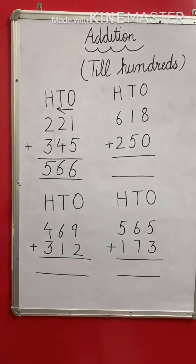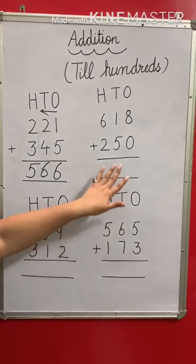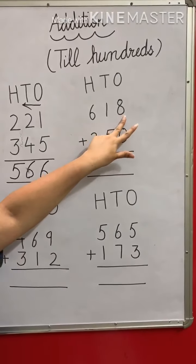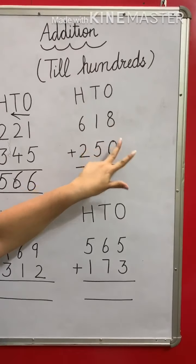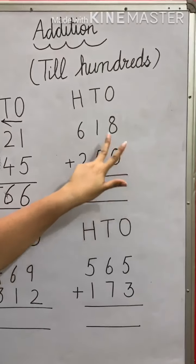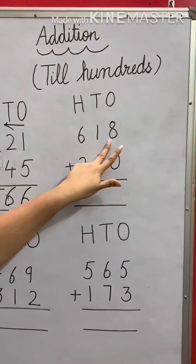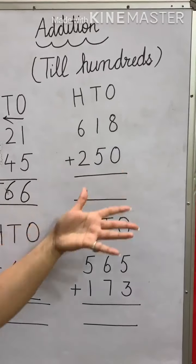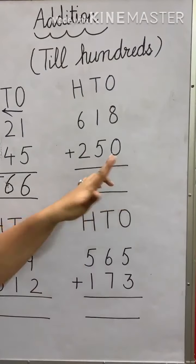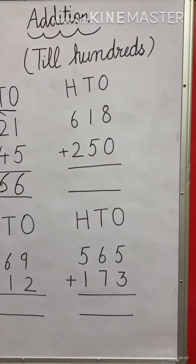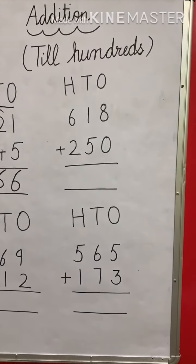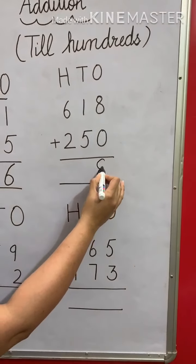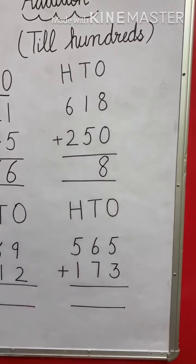Let's take another example. At the ones place we have 8 and 0. Which number is greater? 8 — we will keep it in mind. But 0 means nothing, so nothing is to be added. When nothing is added we will get the same number, so here we get 8 only.